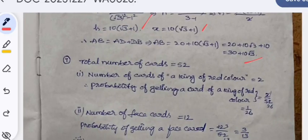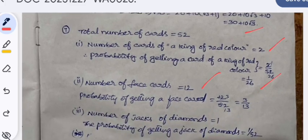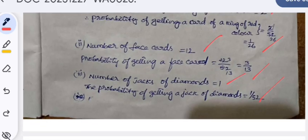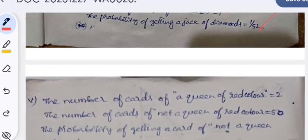Total number of cards: 52. Number of cards of a king of red color: 2. The probability of getting a king of red color is 1/26. Number of face cards: 12. Probability of getting a face card is 3/13. The number of cards jack of diamonds is 1, so its probability is 1/52.